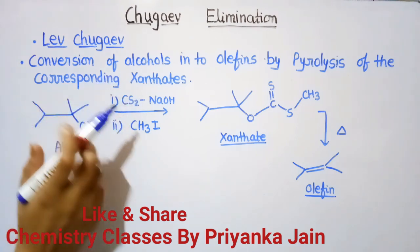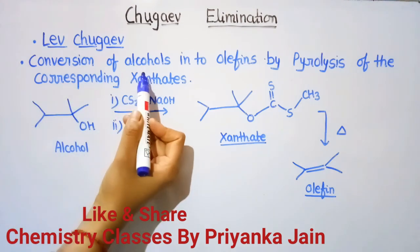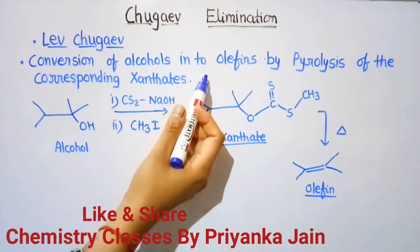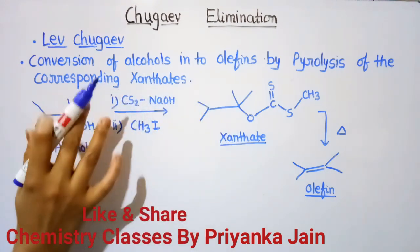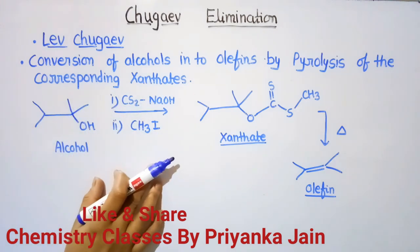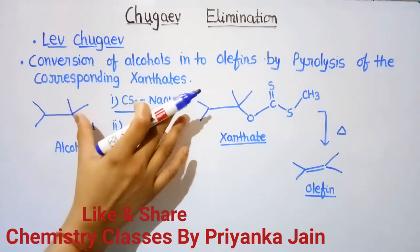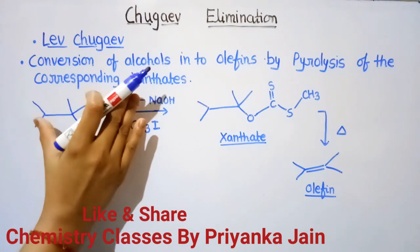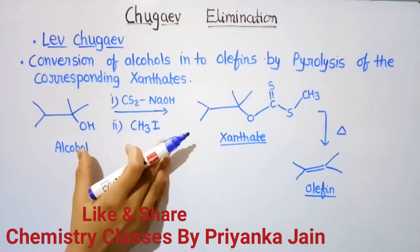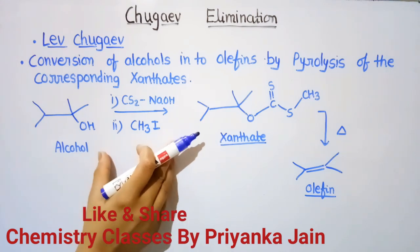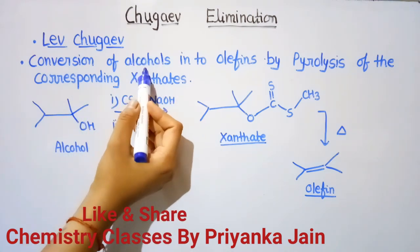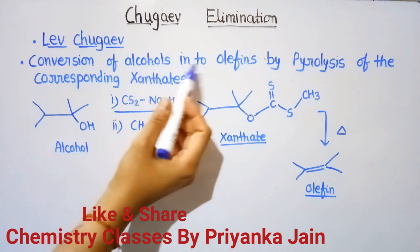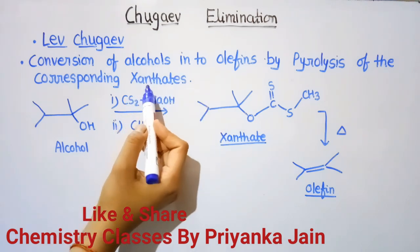It is the conversion of alcohols into the corresponding olefins by the pyrolysis of the corresponding xanthates. We can also term it as the pyrolysis of the xanthates, because the alcohols that we have to convert into olefins are firstly converted to the xanthates.